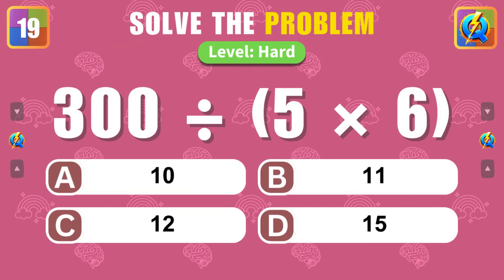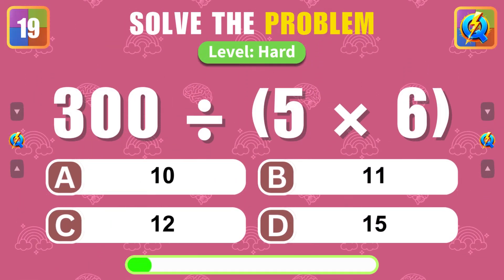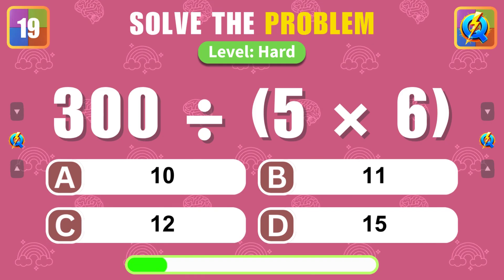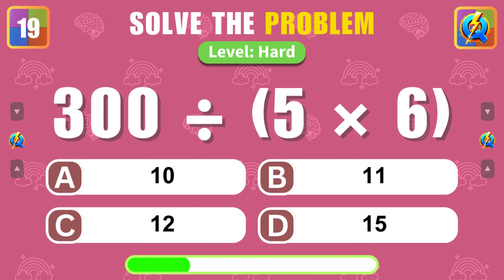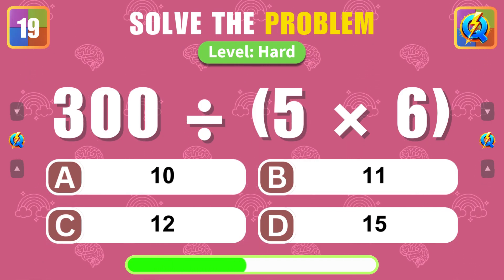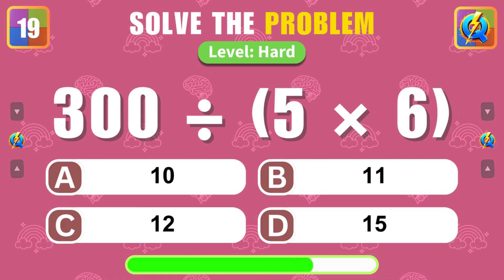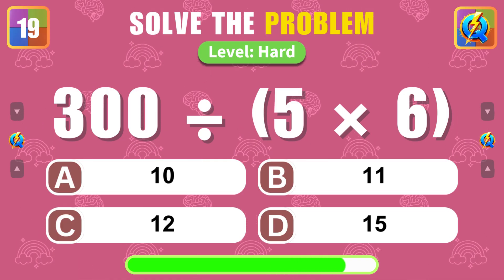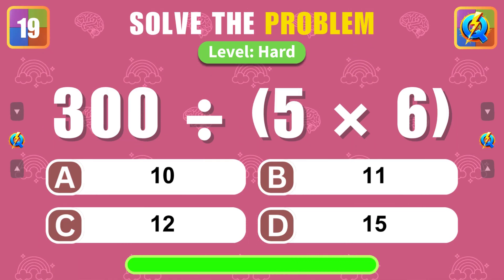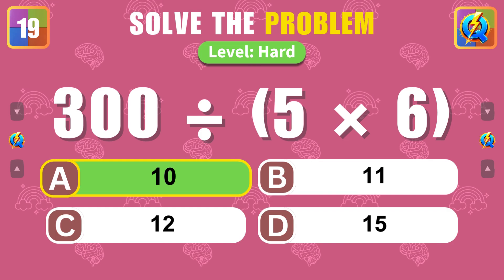What is the result of 300 divided by 5 times 6? Excellent, the answer is 10.